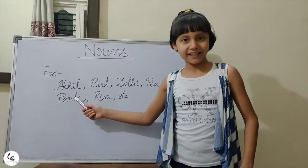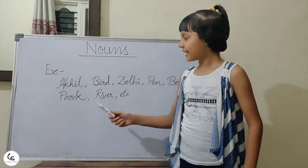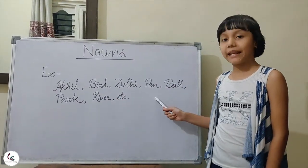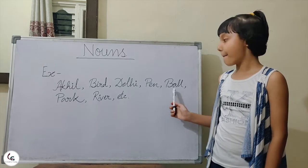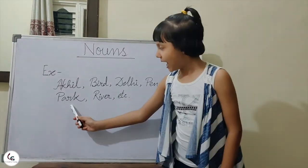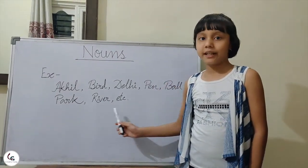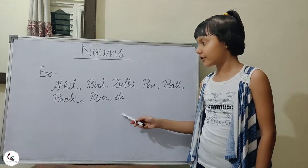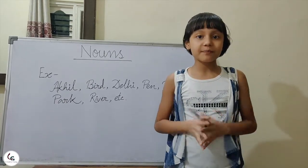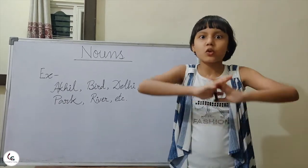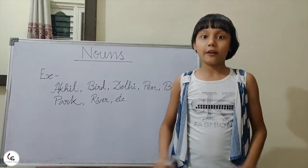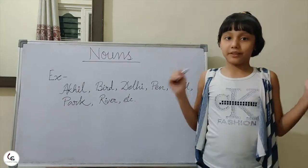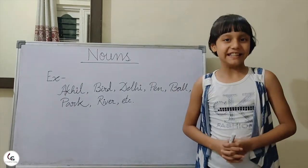Let's see. Akhil, Bird, Delhi, Pen, Wall, Park, River etc. Why etc? Because there are so many nouns in the whole world. These all are representing names.